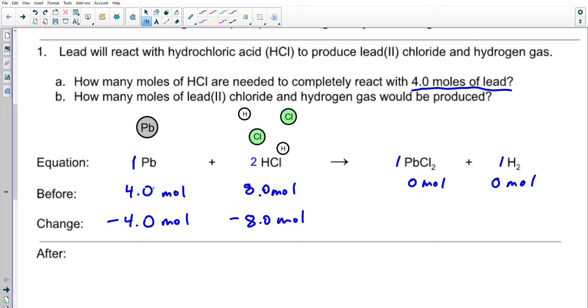Looking at lead, I had four moles to start and it needs to react in a one to one ratio. So I'm going to make four moles of PbCl2 and four moles of H2. After the reaction has occurred, all of my lead has reacted—zero moles left. All eight moles of HCl have reacted—zero moles left. On the product side, I'm left with four moles of PbCl2 and four moles of H2.